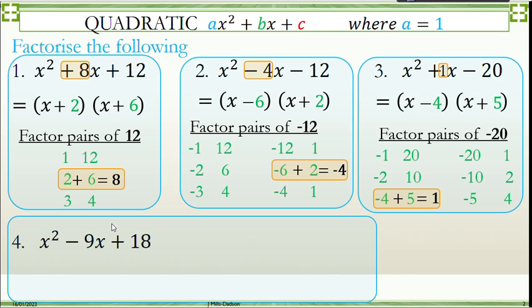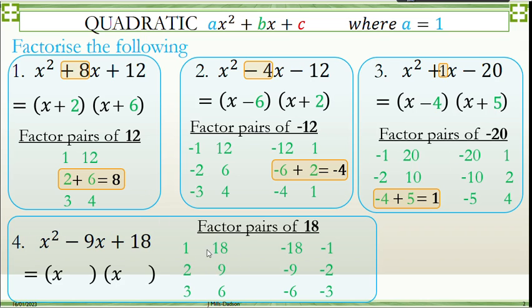The last one. Factor pairs. It could be positive times positive or negative times negative because negative times negative is also positive. We are looking for a pair that will add up to -9. And it's this one. So you put x in both brackets. And that's as simple as that.